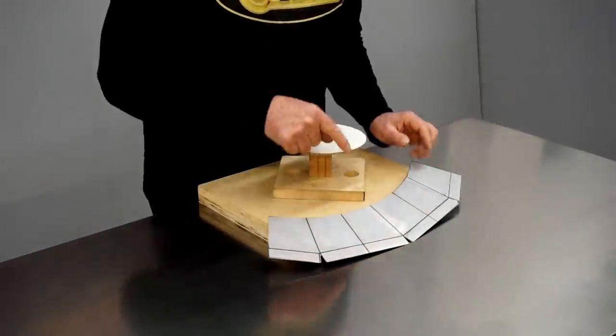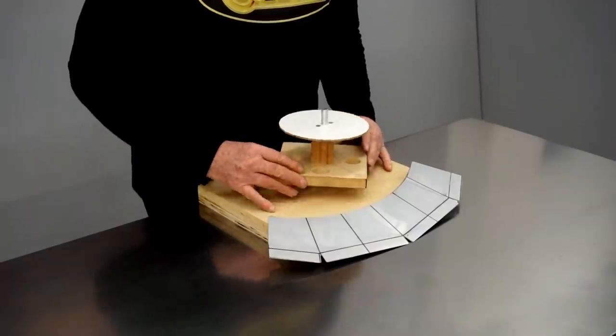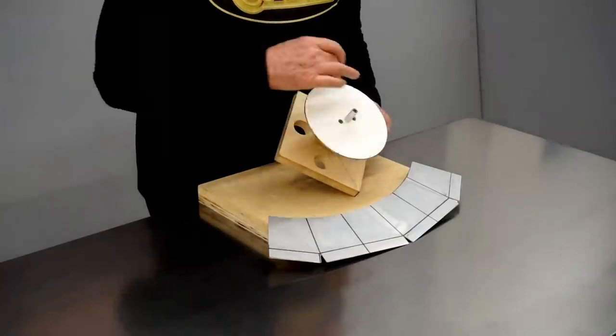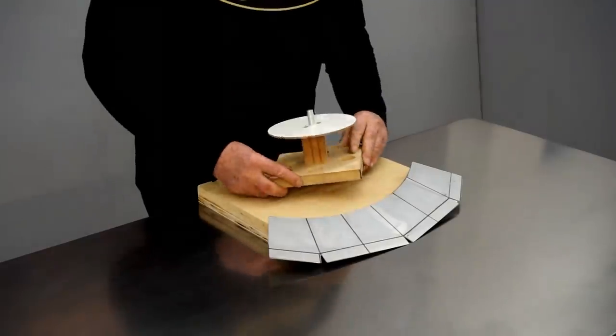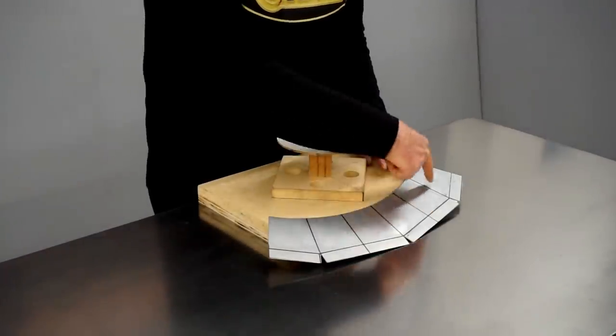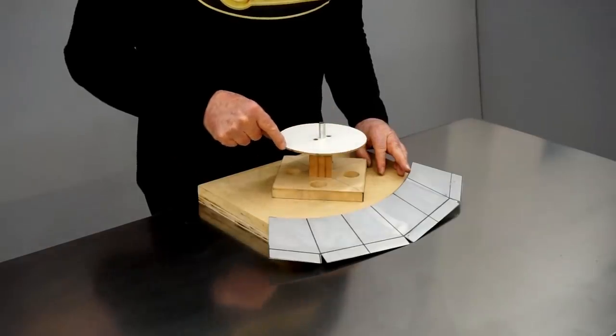And then I've drawn lines that will meet the notches on the disc. So this disc has quadrants marked on it, and more notches halfway between the quadrants. And each of these lines comes right up to meet one of these notches.